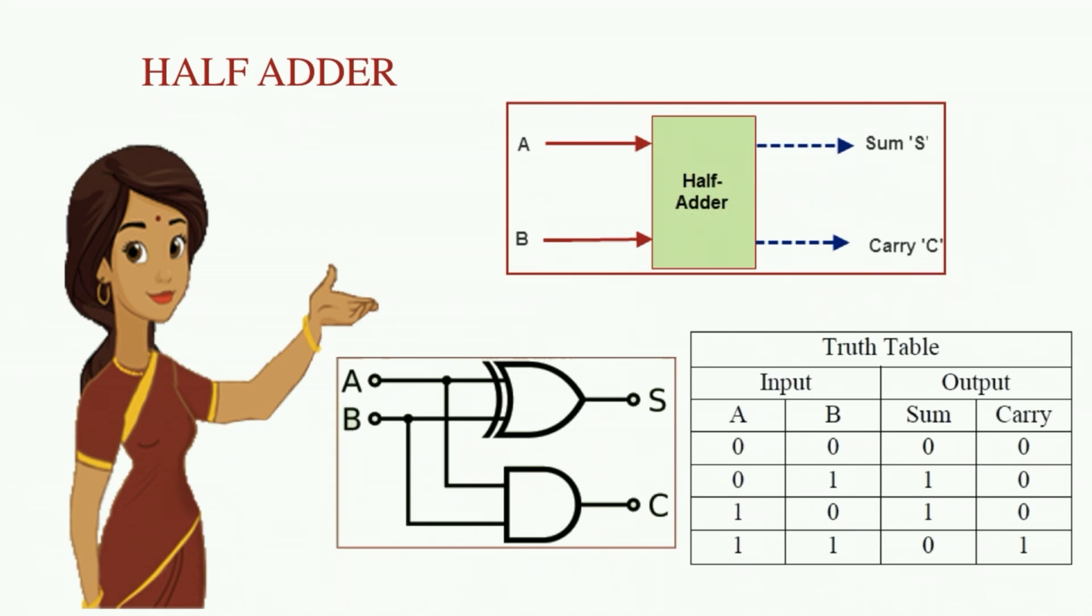Before we start realizing the half adder circuit using Logisim, let us understand a little bit about the circuit. A half adder is a combinational arithmetic circuit that adds two numbers and produces a sum bit and a carry bit at its output.